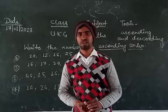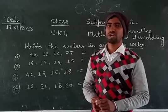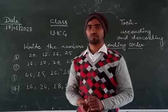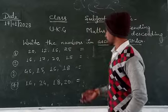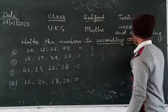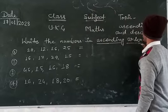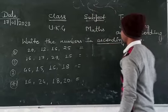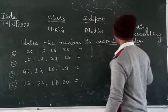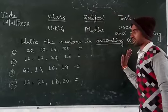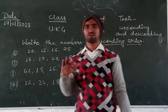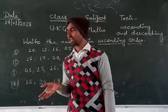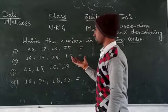Hello dear students, good morning. Welcome back to KB Rai Alimi online classes. Today's topic is ascending and descending order. Recommended for ages 15 to 20. In ascending order, we select the smallest number first.